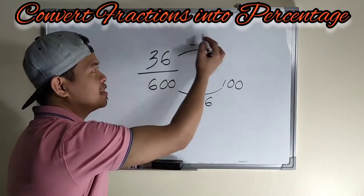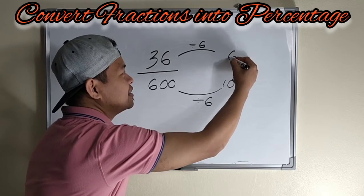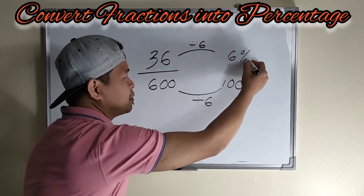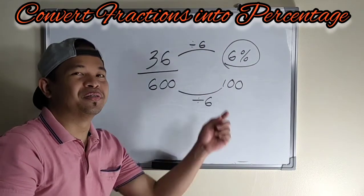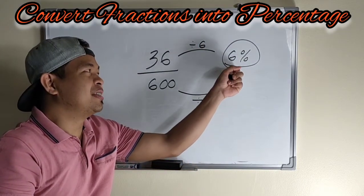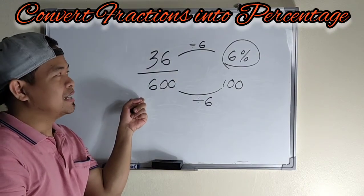So 36 divided by 6 is 6. So this is our percentage of 36 over 600.